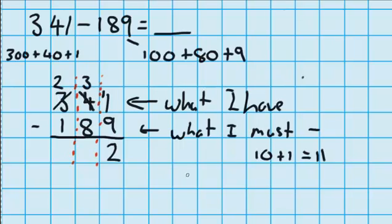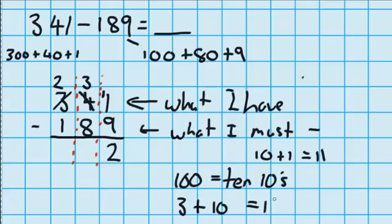Now we know that 100 is the same as 10 tens. And you can see over here I've already got 3 tens. So if I have 3 tens and I add the 10 more tens that I've got from the hundreds column, that's going to give me 13.